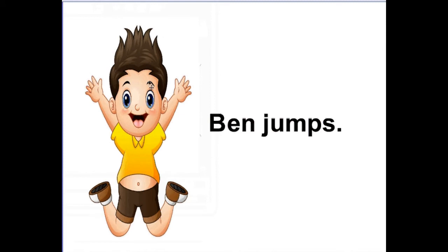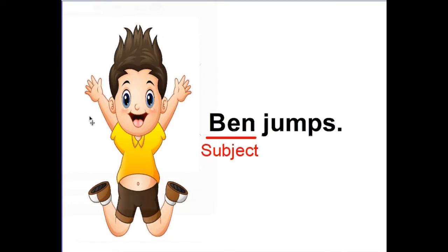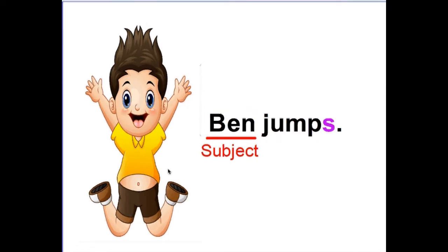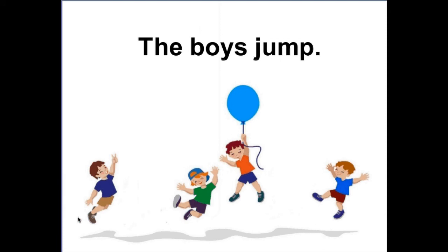Read the sentence with me: 'Ben jumps.' The subject in this sentence names one person — it's singular. The verb 'jumps' has an S at the end. Here is something important to remember: a singular verb always has an S at the end. So you must add an S to the verb when it tells about a noun that names just one.